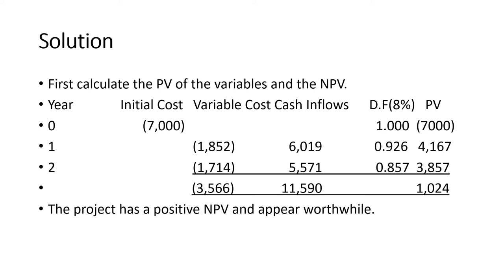Year Two: discount factor at 8% is 0.857; variable cost $2,000 × 0.857 = $1,714; cash inflows $6,500 × 0.857 = $5,571; PV = $3,857 (being $5,571 minus $1,714). NPV = negative $7,000 + $4,167 + $3,857 = $1,024. Total PV of cash inflows: $11,590; total PV of variable cost: $3,566. The project has a positive NPV and appears worthwhile.